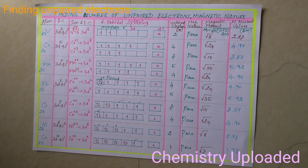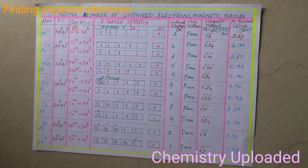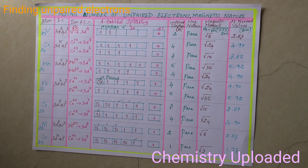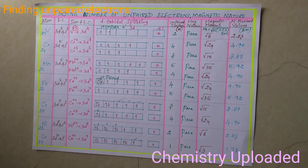I hope you understand the concept of how to find the number of unpaired electrons, magnetic moment, and magnetic behavior. First, you should know how to write the electronic configuration for atoms and ions. Second, you should know how to fill the electrons in D orbitals. Third, find the number of unpaired electrons. Using these tricks, you can find the number of unpaired electrons easily within a minute. If you like this video, please click the like button, share, and subscribe to my channel. Thank you for watching.